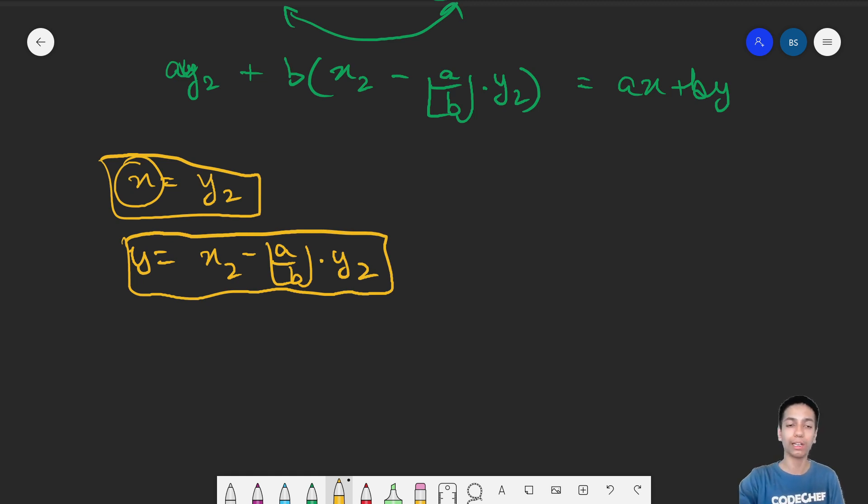This is the algorithm, in fact. If we do this recursively, we also need a base case. The base case will simply be when you have A and 0.